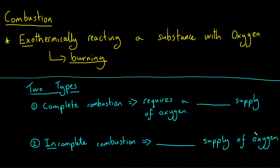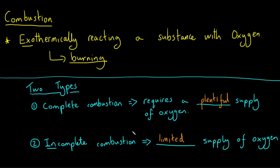There are two different types of combustion reaction we need to be aware of — complete combustion and incomplete combustion. Complete combustion, the clue is in the name: we've completely combusted whatever substance we're burning. In order to do that, we need a plentiful supply of oxygen. Incomplete combustion is the opposite — the combustion reaction is incomplete because there isn't enough oxygen; there is a limited supply of oxygen.